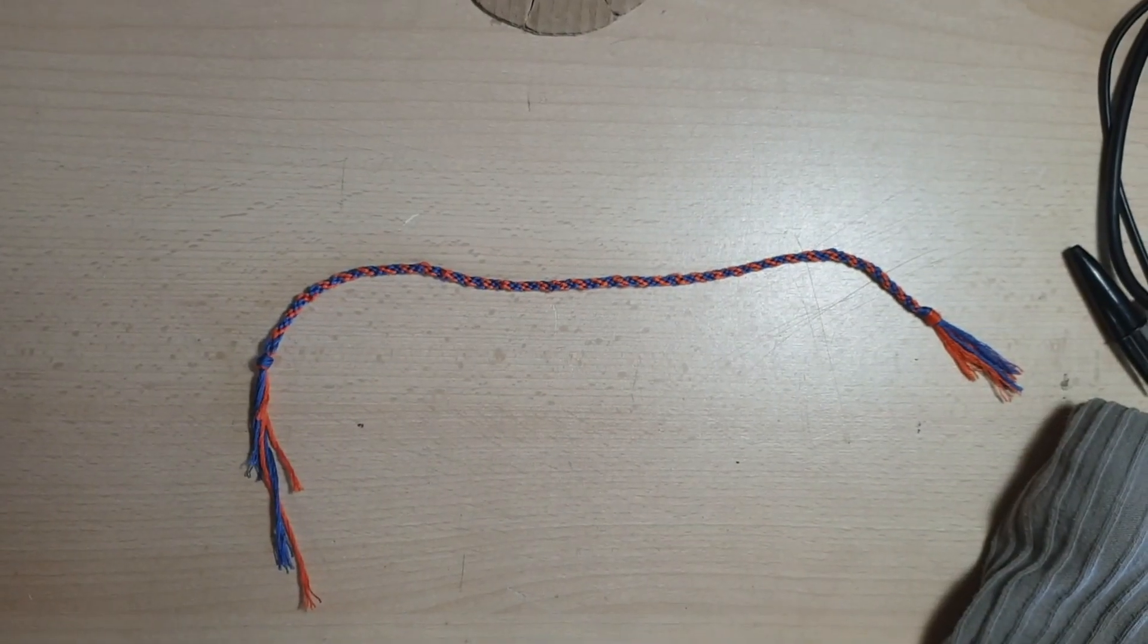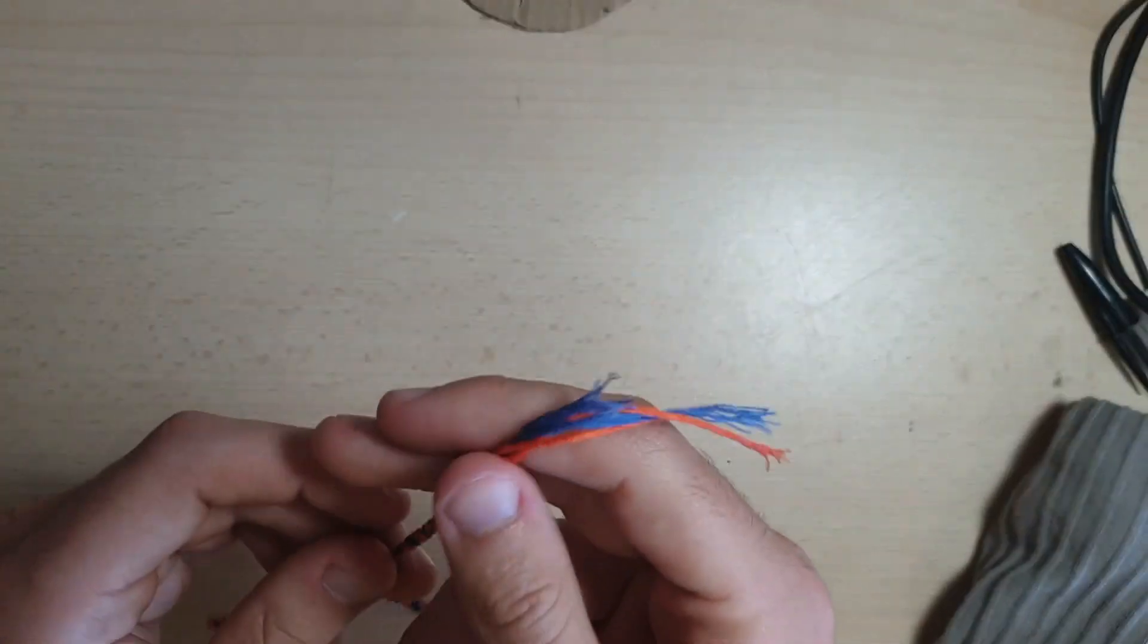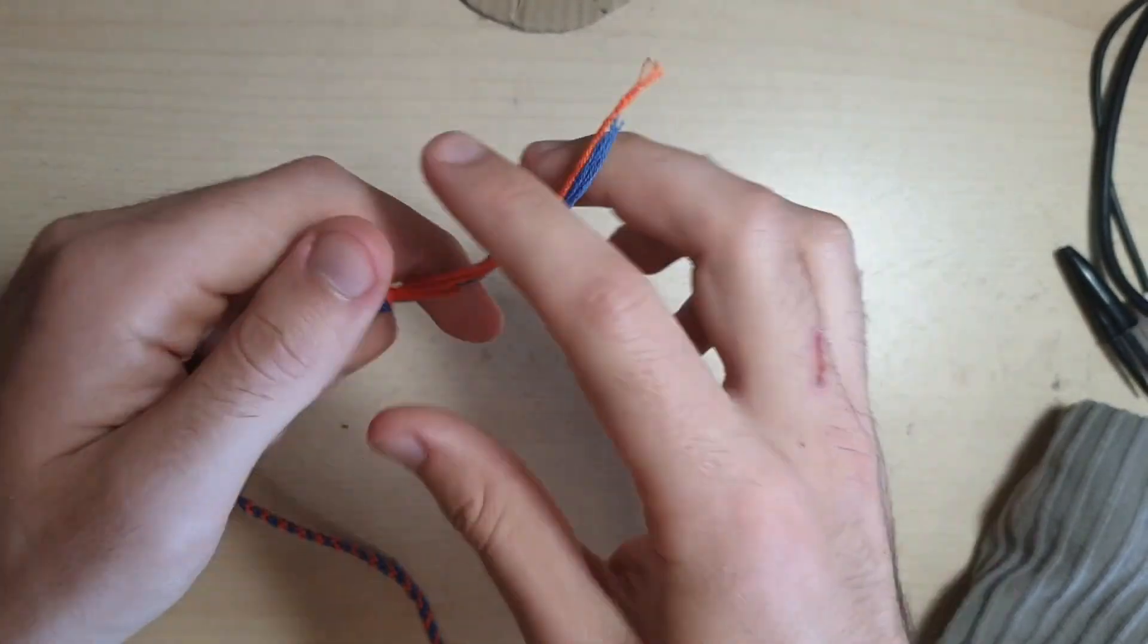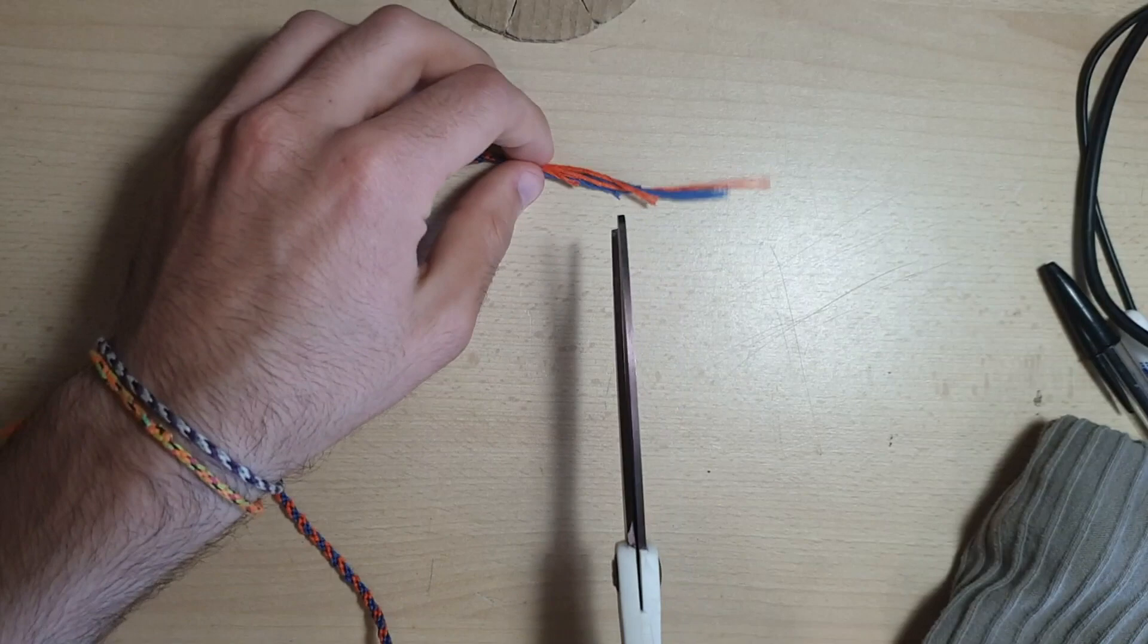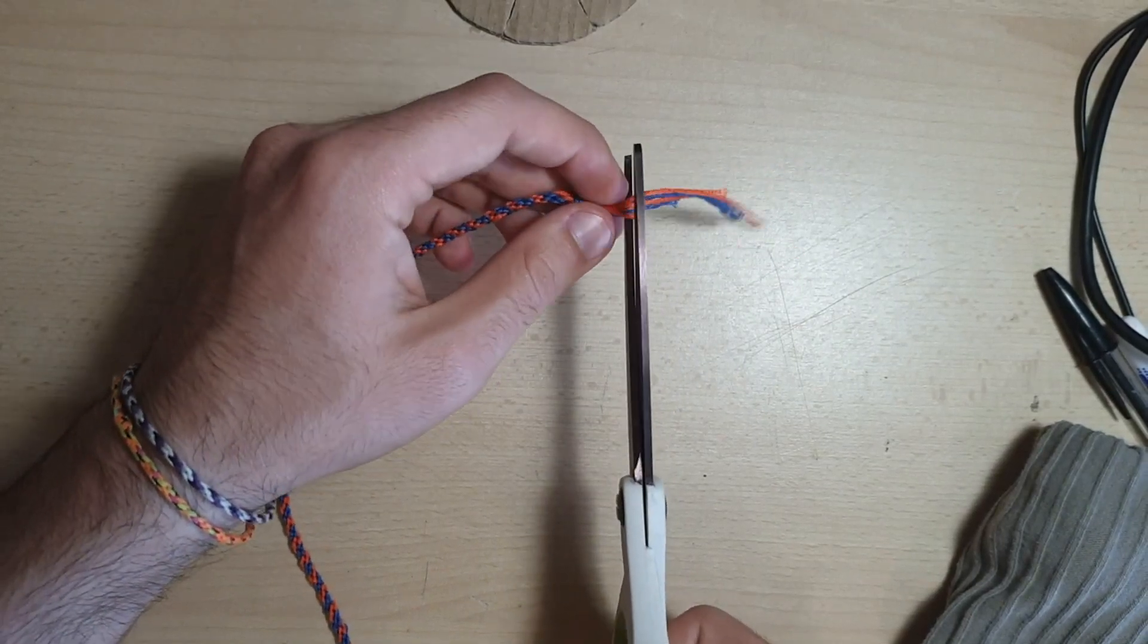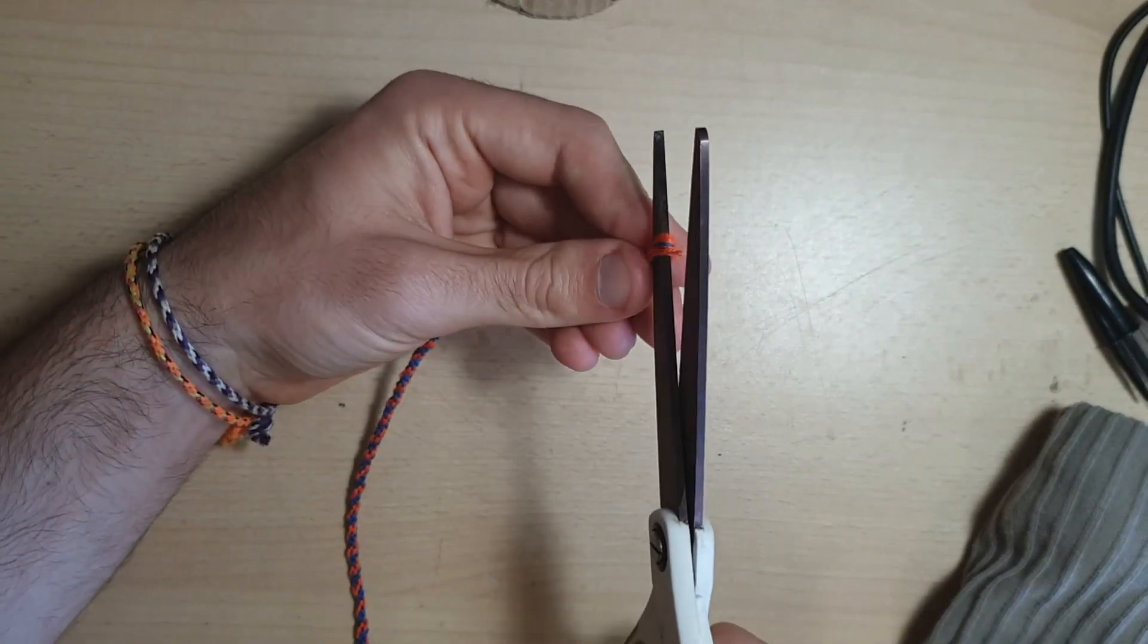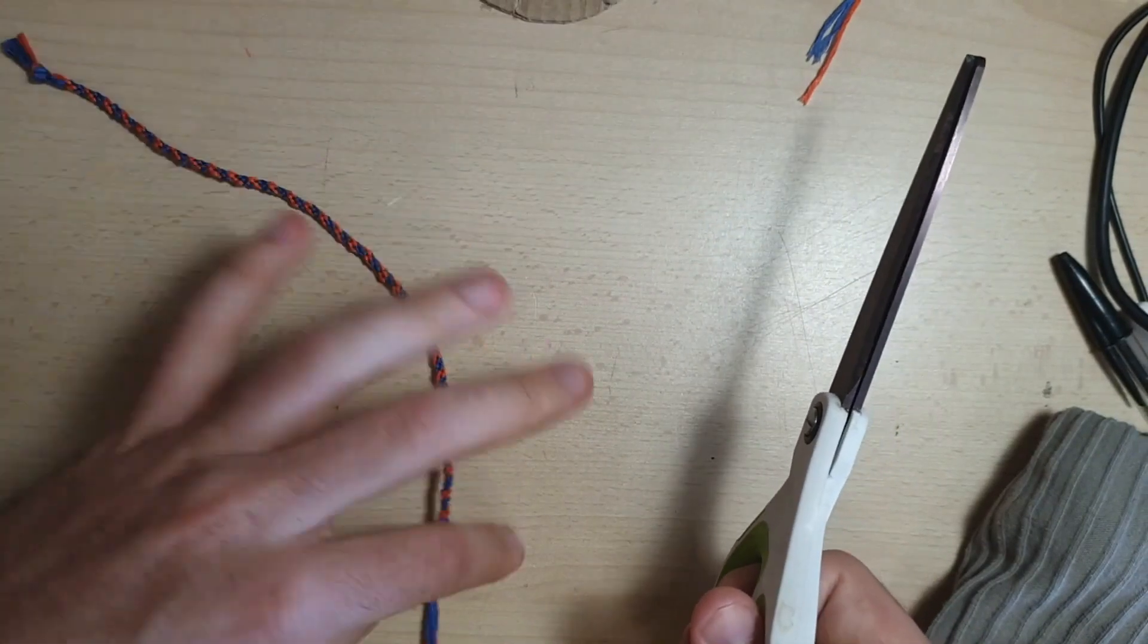And now, once you've got the full length done, the first thing you want to do is get rid of any trailing edges. Get a pair of scissors, and just not too close to the knot, chop off the excess string that you've got at both ends.